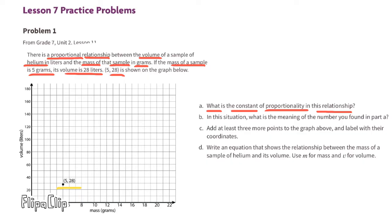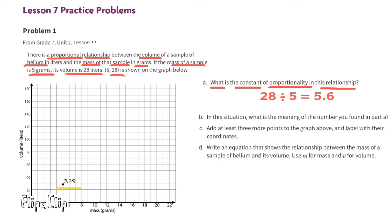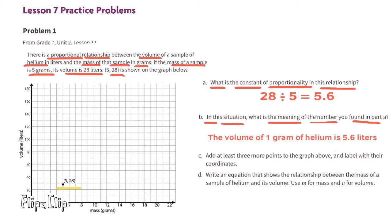28 liters divided by 5 grams. The constant of proportionality is 5.6 liters per gram. Part b: In this situation, what is the meaning of the number you found in part a? The volume of one gram of helium is 5.6 liters.